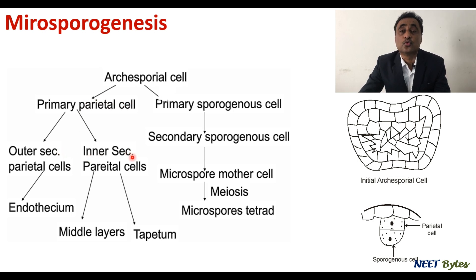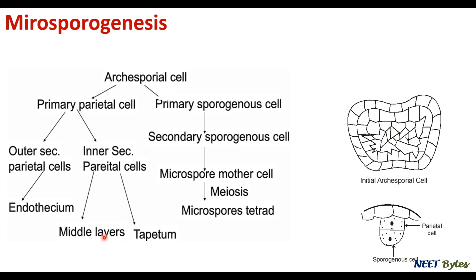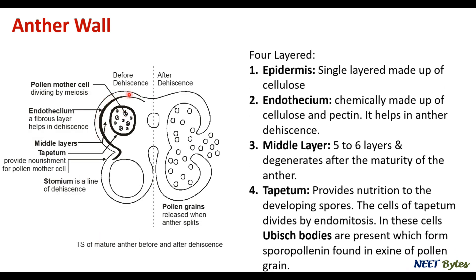Now let's look at the role of the anther wall. The anther wall is four-layered. The outer layer is the epidermis — single-layered and made of cellulose. Below it is the endothecium, which helps in the release of the anther by breaking down pectic material to release the pollen grains. Below this is the middle layer — five to six layers — which degenerates at maturity.